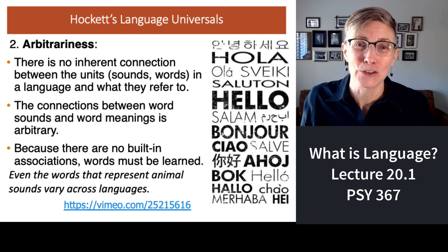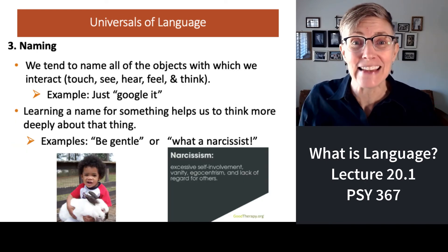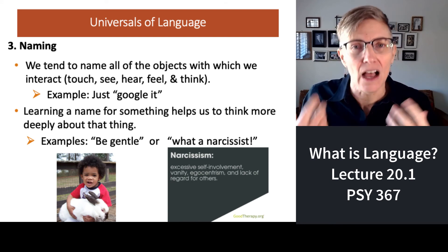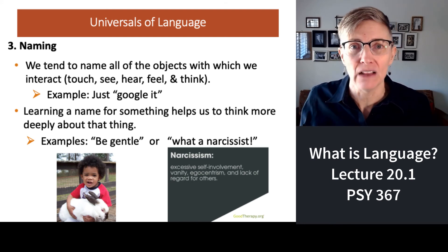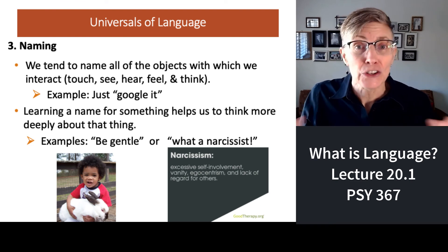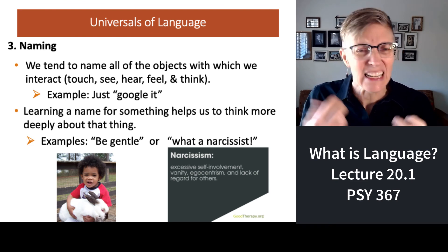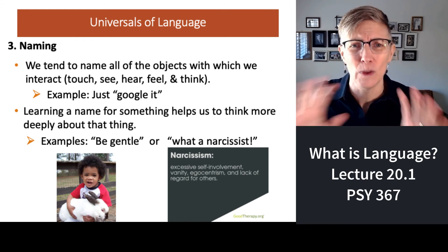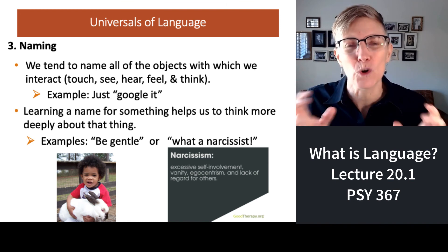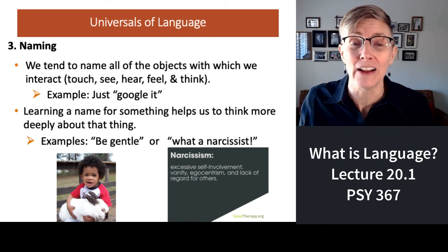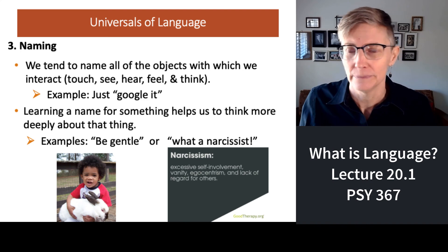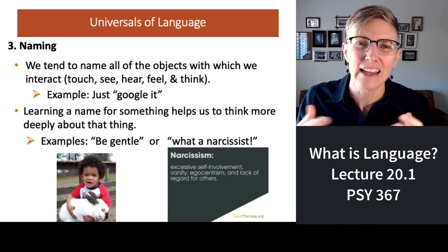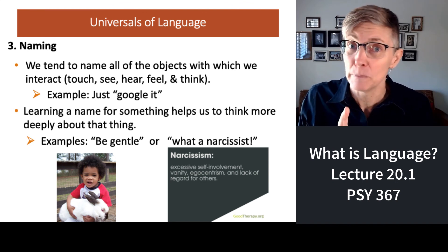The last universal I want to tell you about is naming. We tend to name things that we see. Naming allows us to understand something at a deeper level. For example, 'narcissism' — somebody who's super vain and egocentric and self-involved and doesn't care about what they do to other people. Once you know that word, narcissism, it helps you identify narcissism in other people. Labels and words also help us understand concepts that we teach to our children, like 'be gentle.'